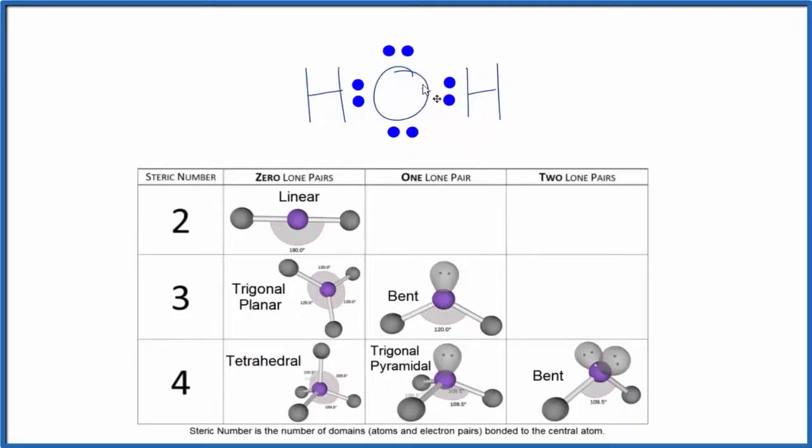Now we can see that the oxygen has four things bonded to it. We call that the steric number. So we have the hydrogen, lone pair, lone pair, and the other hydrogen. So the steric number is going to be four. We have a steric number of four, and then we count the number of lone pairs. One lone pair, two lone pairs.